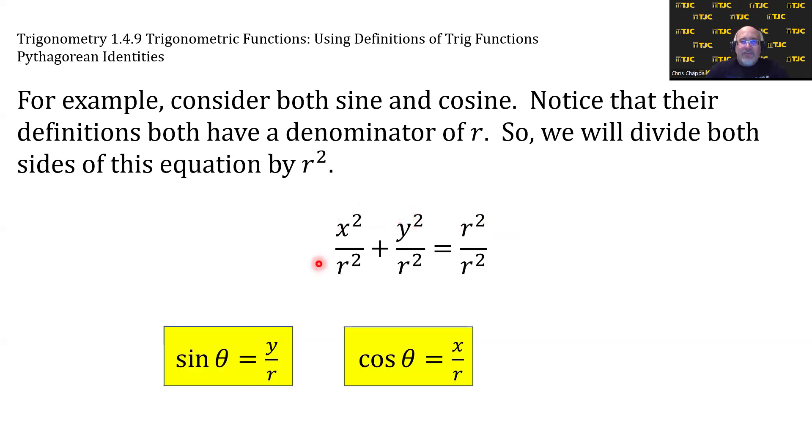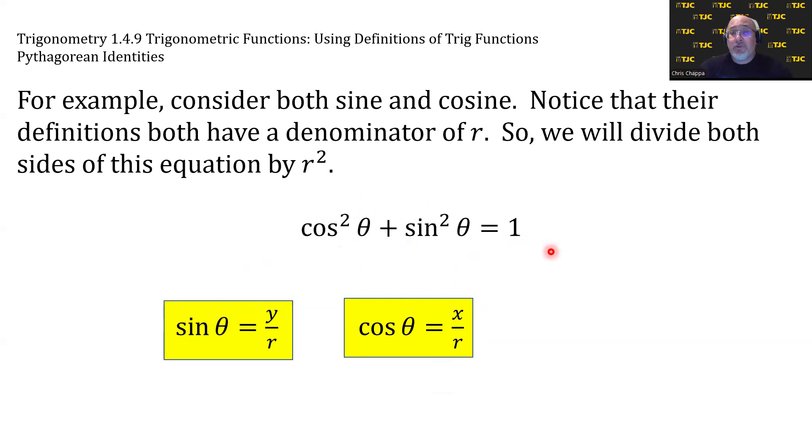But notice that this first fraction, x²/r², is just the square of cosine. And y²/r² is the square of sine. And of course, r²/r² is one, giving us cos²θ + sin²θ = 1. And the theta was immaterial.